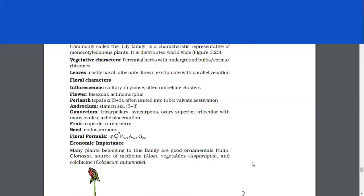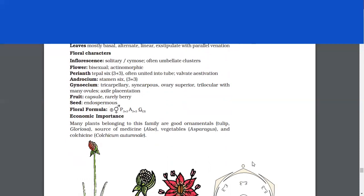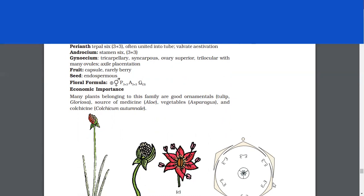Floral characters. Inflorescence, solitary, cymose, often umbellate clusters. Flower, bisexual, actinomorphic. Perianth. Tepals 6, 3 plus 3, often united into tube, valvate estivation. Androecium, stamens 6. Gynoecium, tricarpellary, syncarpous, ovary superior, trilocular with many ovules, axile placentation.